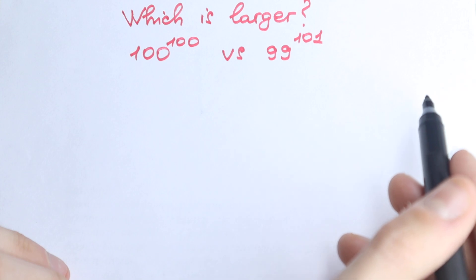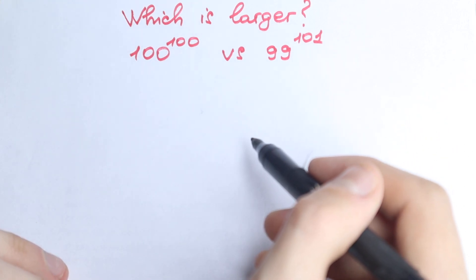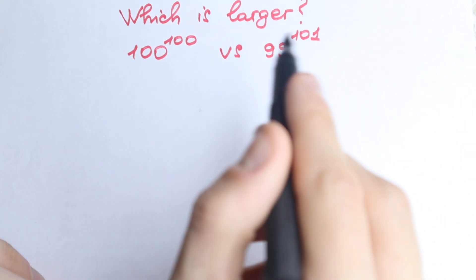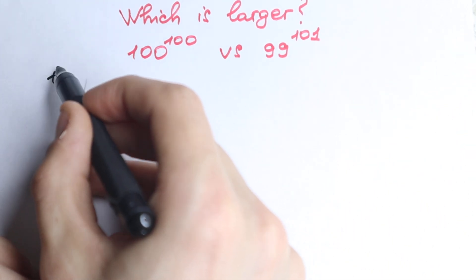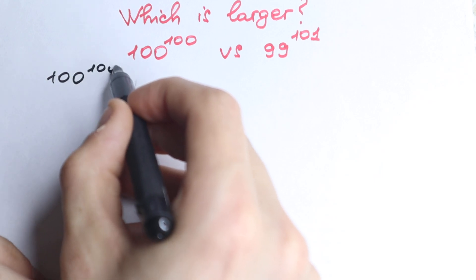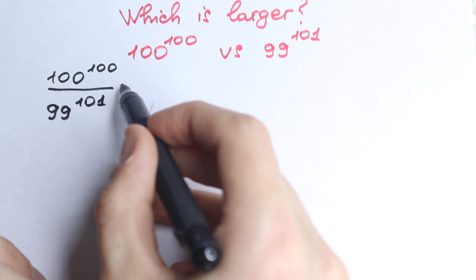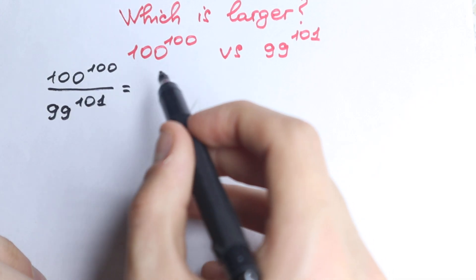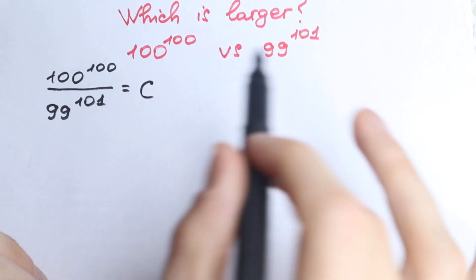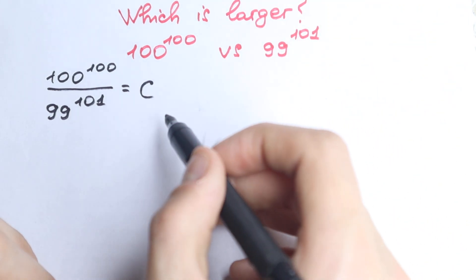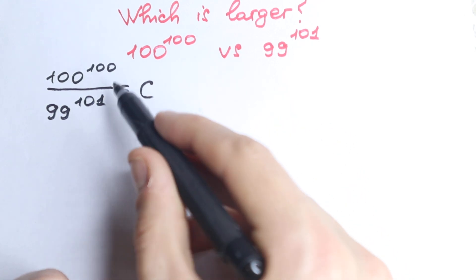So let's try to compare this in another way, because on the left side we cannot factor easily, and we need a really interesting trick. The first trick: we divide this number by the other one. So we have 100 to the power 100 divided by 99 to the power 101. Imagine that dividing both numbers gives us some constant — we don't know exactly the value of this constant, but let's say we have some result.